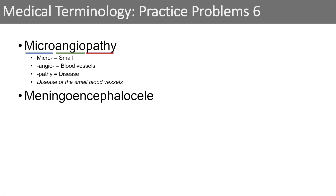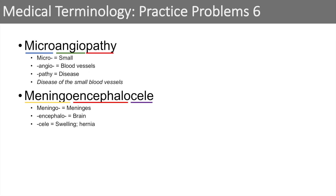The next word is meningoencephalocele. It's a big word, but we approach all medical terms the same way — just break it down into pieces you are familiar with. Meningo refers to the meninges, which are the layers in our central nervous system. Encephalo means the brain — we've heard of encephalitis. And cele means a swelling, hernia, or outpouching. So when we put this all together, it means a swelling or hernia of the meninges and brain.